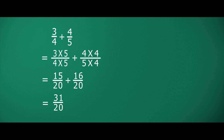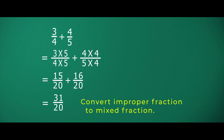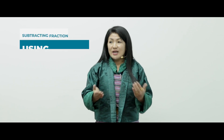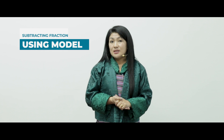Now look at the answer: thirty-one over twenty. What do you think? It is an improper fraction. As our answer is an improper fraction, we have to convert it into a mixed number. When we convert it, we get one and eleven over twenty.